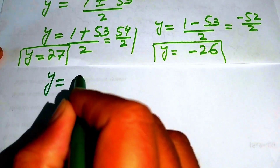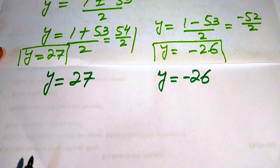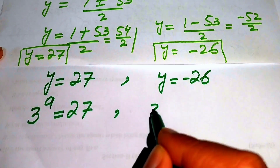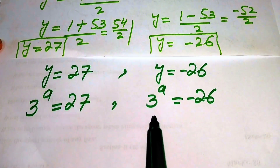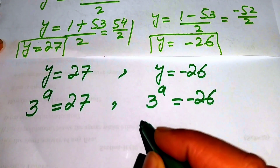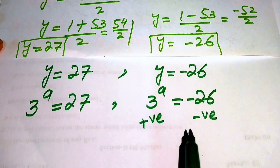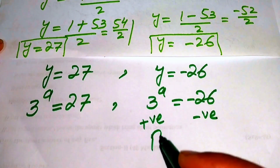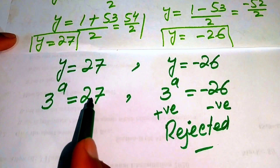We have two values of y: 27 and minus 26. We back-substitute using y equals 3 to the power of a. This gives us 3 to the power of a equals 27, and in the other case, 3 to the power of a equals minus 26. We focus on the second case: the left hand side is an exponential function, but the right hand side is negative. Since an exponential function always gives a positive value, it cannot equal a negative value, so we reject this case.